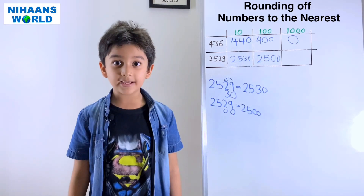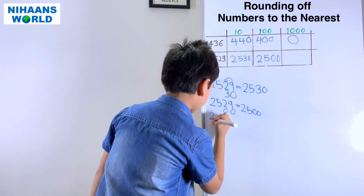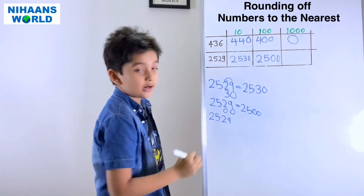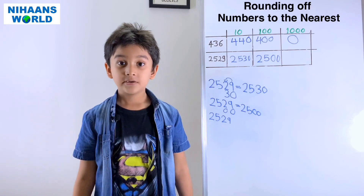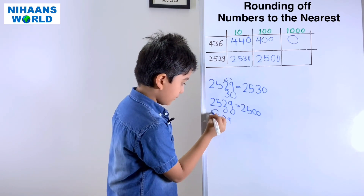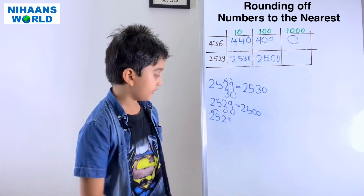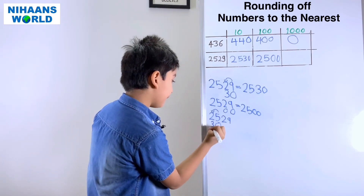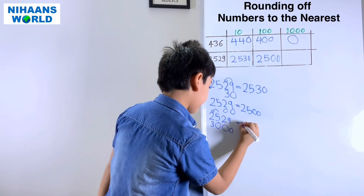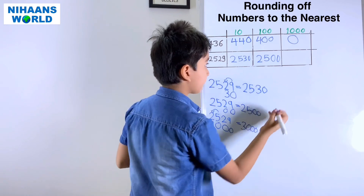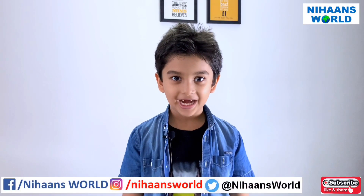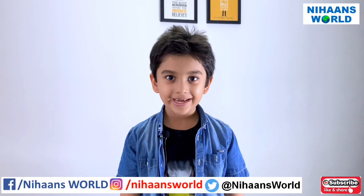For 2,529 rounded to the nearest thousand, we check the hundreds place — 5 is a strong number, so it gives 1 to the thousands digit: 2 becomes 3, and 5, 2, and 9 become 0. So 2,529 rounded to the nearest thousand is 3,000.